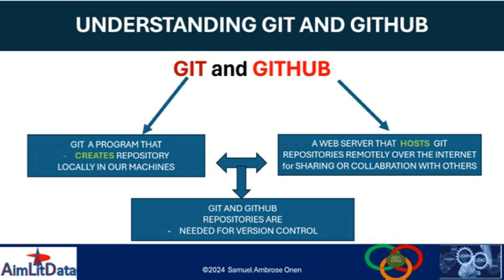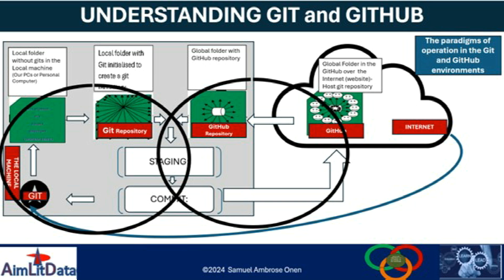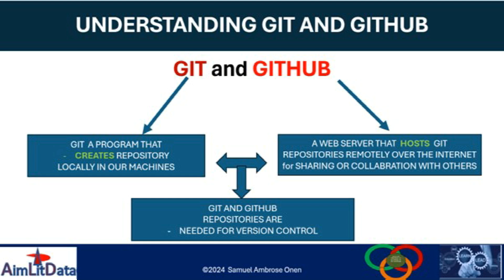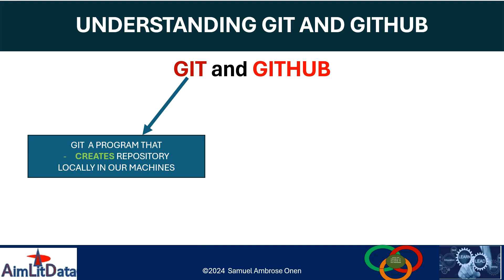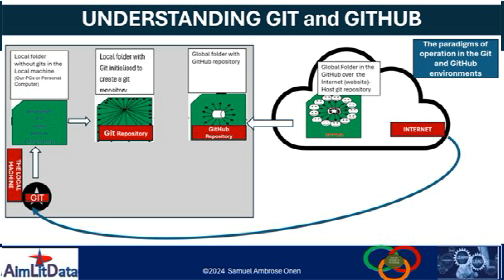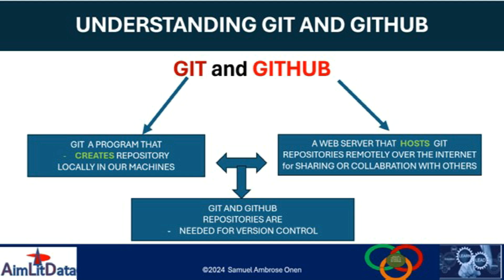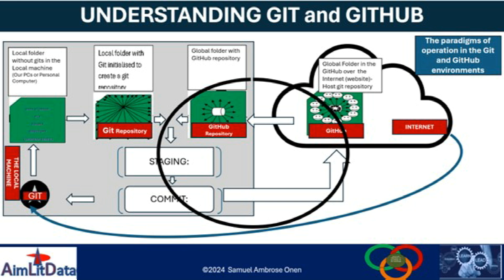In this understanding of Git and GitHub, we have looked at Git and GitHub as being completely different although they have something in common. The binding relationship between them is Git itself — Git binds Git and GitHub. The difference is that Git is a program that creates repositories locally on your machine, but GitHub is a web server that hosts Git repositories remotely over the internet for sharing or collaboration with others.